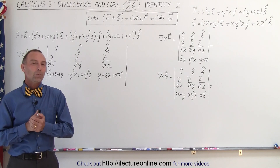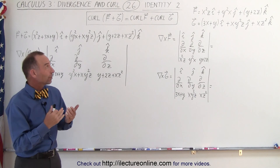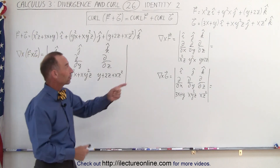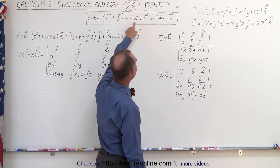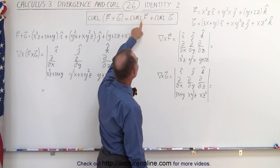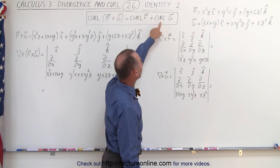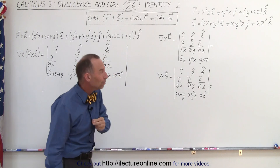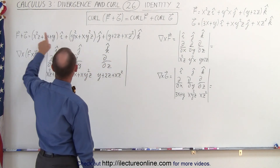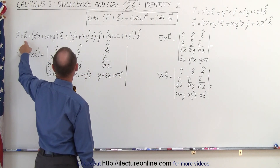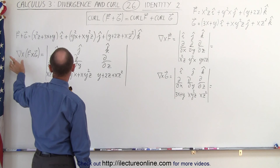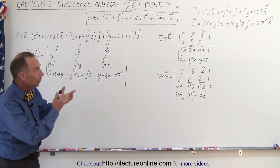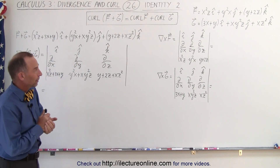Welcome to our lecture online. We have a similar identity for the curl. In other words, we can have two vector fields f and g. We can take the curl of the first vector field, we can take the curl of the second vector field, add those together, and we should get the same result as first adding the two vector fields together and then taking the curl of that sum. We're going to illustrate that with this particular example.